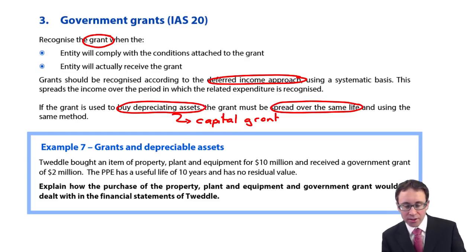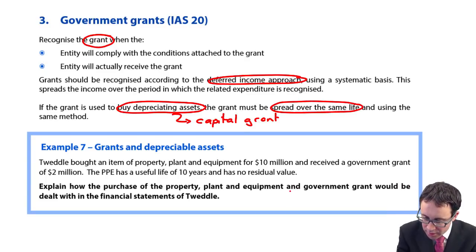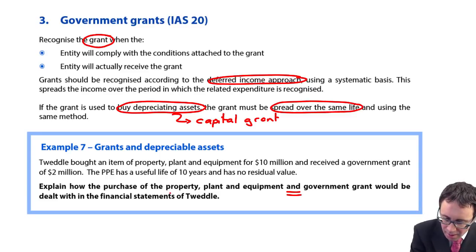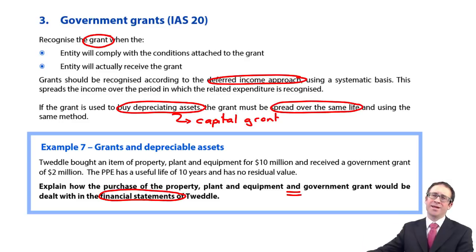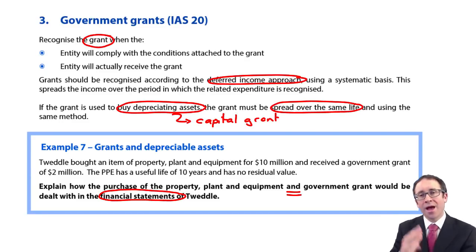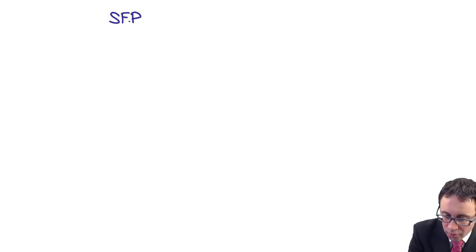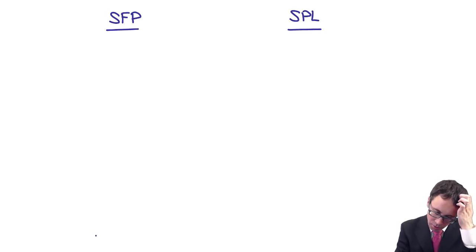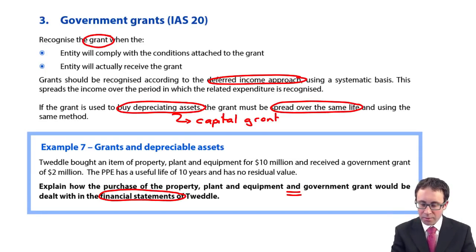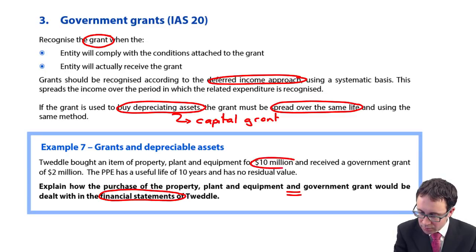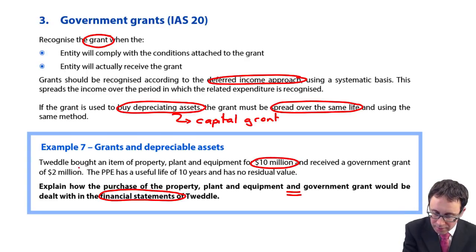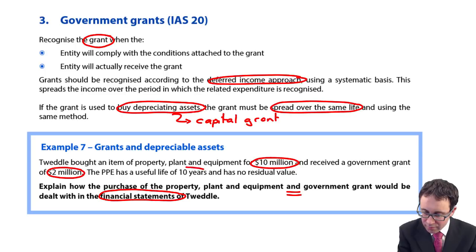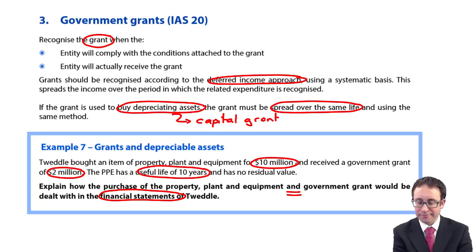The question asks us to explain how the purchase of property, plant and equipment and the government grant would be dealt with in the financial statements. I want to focus on the financial statements — how we would record this in the SFP and also within the statement of profit or loss. Tweddle bought an item of property, plant and equipment for 10 million dollars and received a government grant of 2 million. The PPE has a useful life of 10 years. We'll capitalise the asset at 10 million and depreciate it over 10 years.